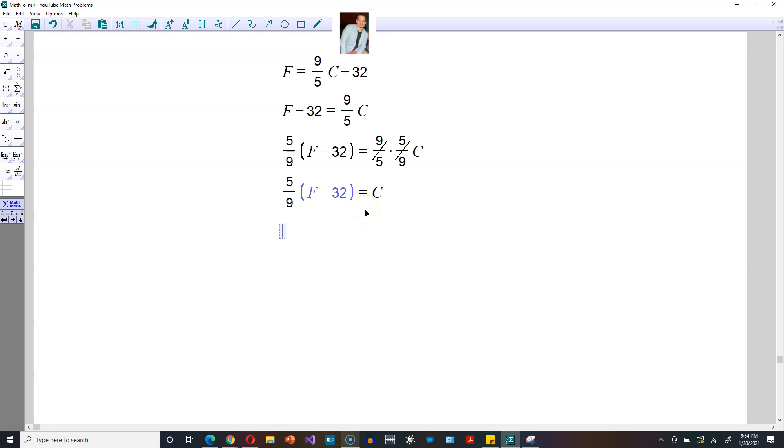Then you distribute the 5/9 to each term within the parentheses. You would have 5 divided by 9 and then F and then minus that 32. Perhaps it helps you to see as 32 over 1. So you would have 5 over 9 times 32 over 1. And then you would do here 5 over 9 F minus 5 times 32 is 160, 9 times 1 on the bottom is 9, so that's equal to C.